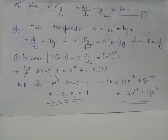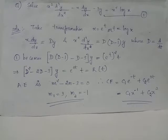In order to convert the given differential equation to a differential equation with constant coefficients, we will make use of the transformation x equals e raised to t, or t equals log x, which are exactly the same. Imposing this transformation, we have x dy/dx equals capital D acting on y, and x squared d²y/dx² equals D(D minus 1) acting on y.